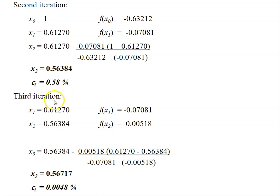So for the third iteration, again, you need the two values of x, initial guesses. So what are the values? Of course, the first value is 0.61270 from here. And the second x is the one that you have just calculated, which is 0.56384. So this and this will be the initial guesses for the third iteration.